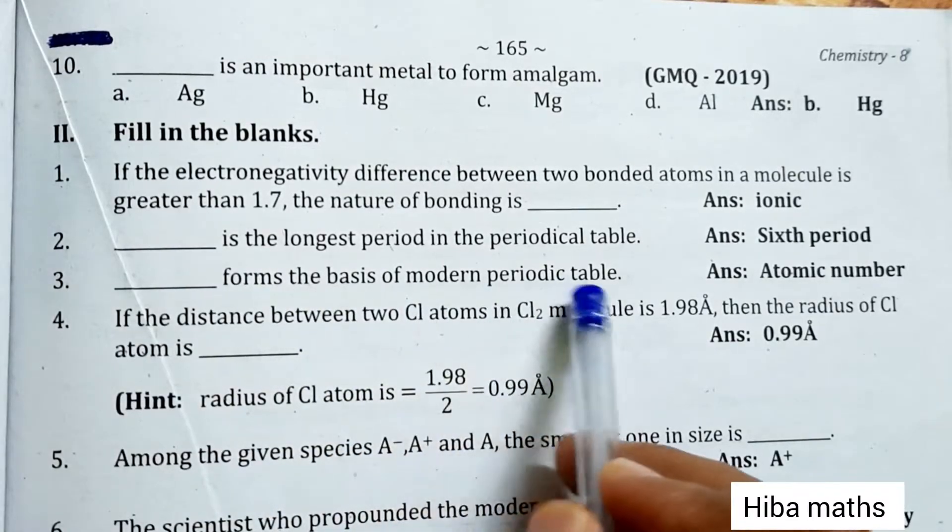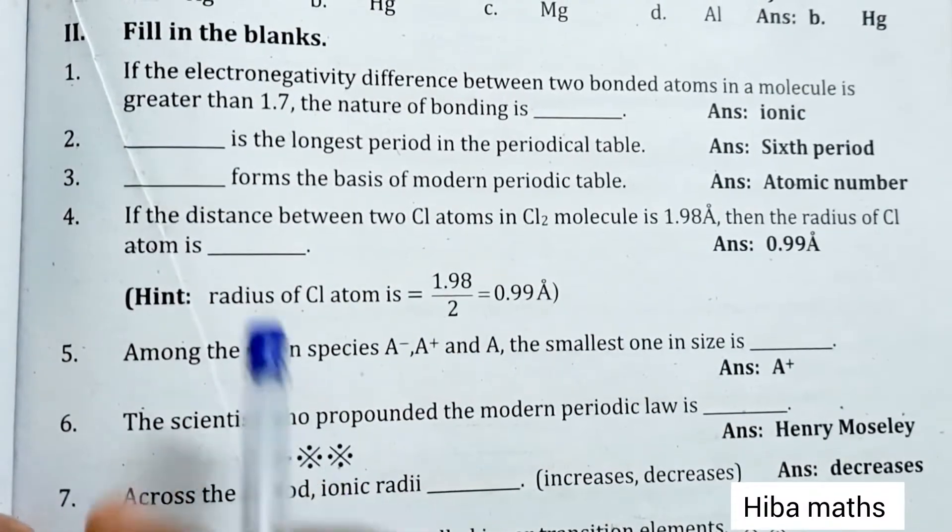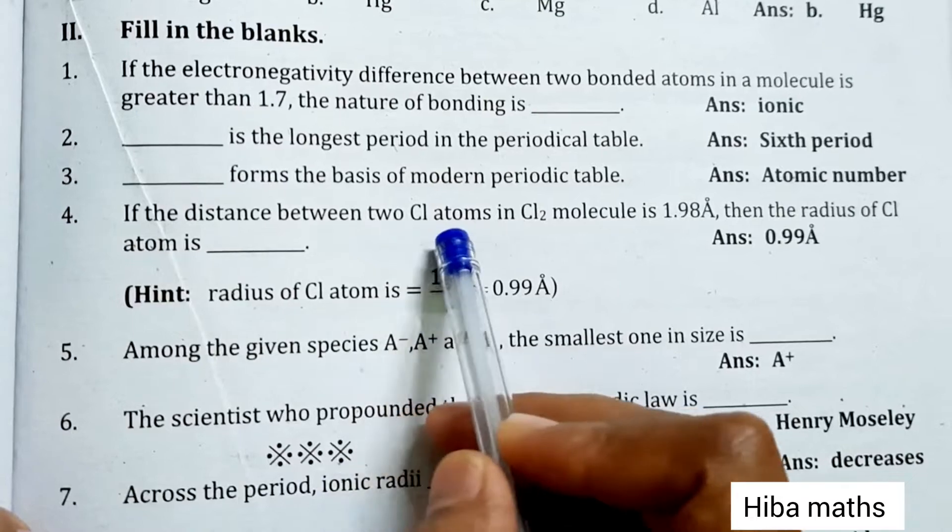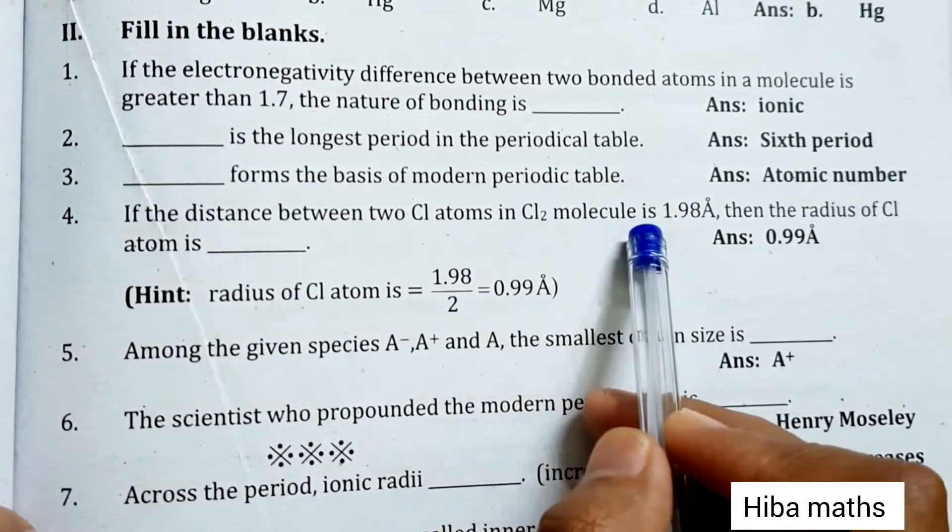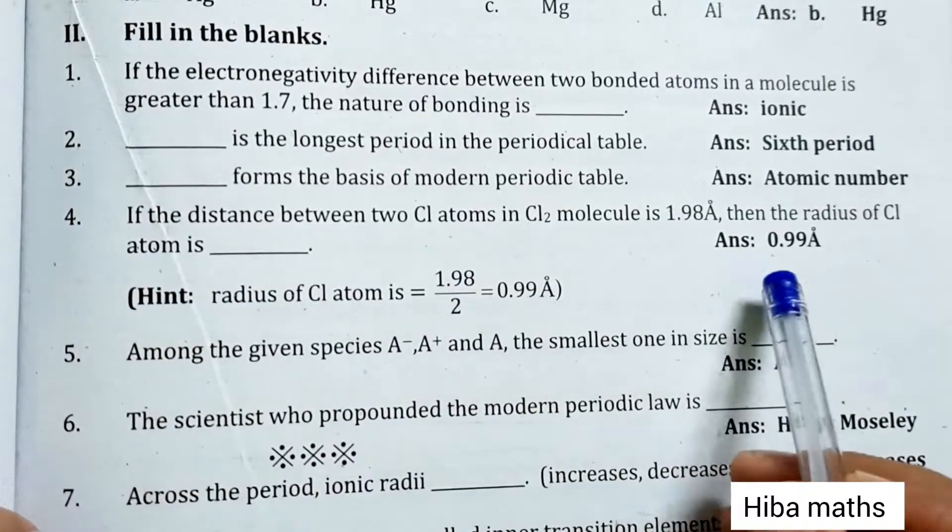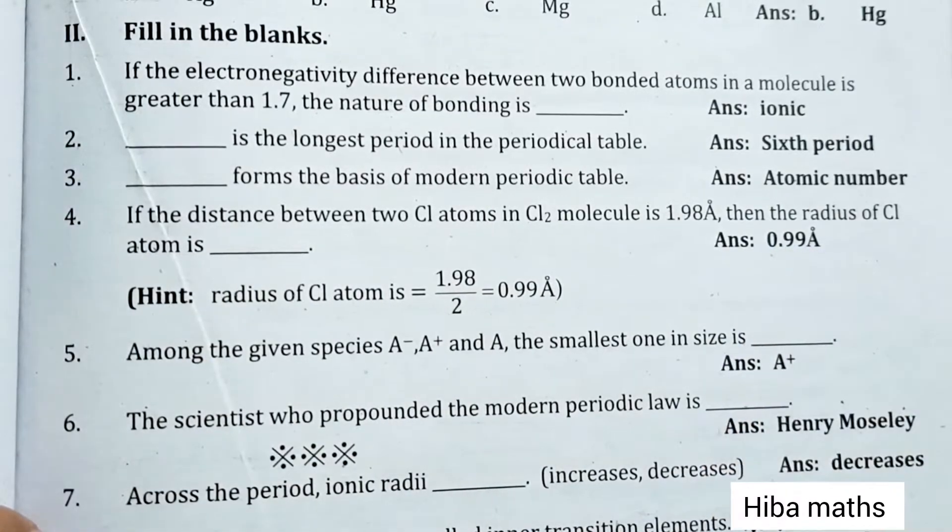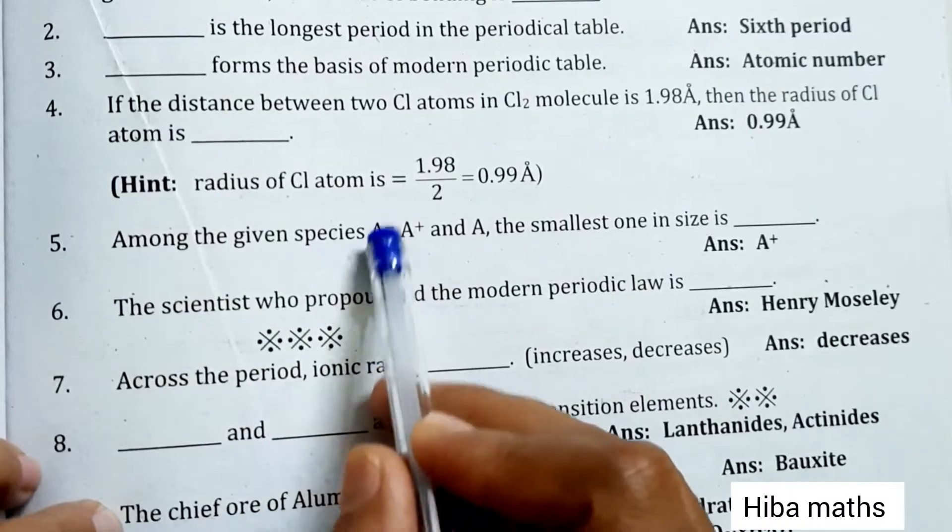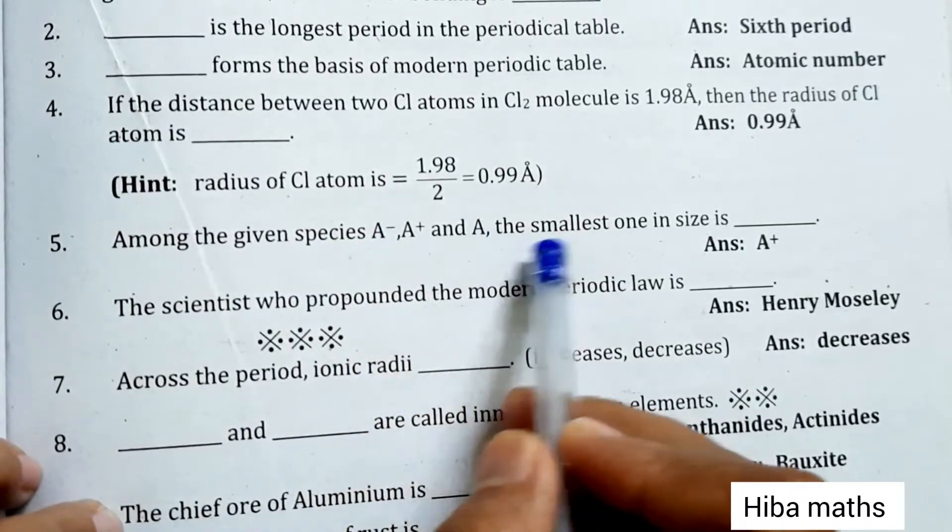If the distance between two chlorine atoms in Cl2 molecule is 1.98Å, then the radius of Cl atom is 0.99Å. Among the given species A minus, A plus, and A, the smallest one in size is A plus.